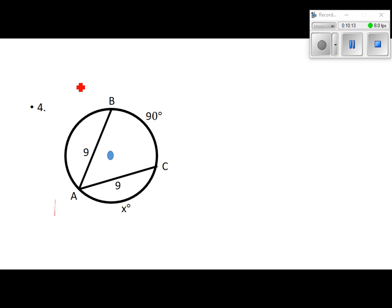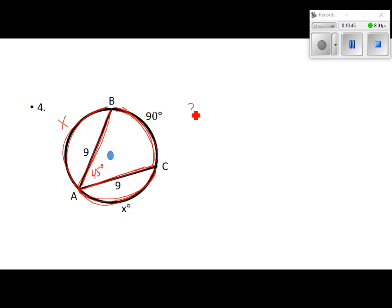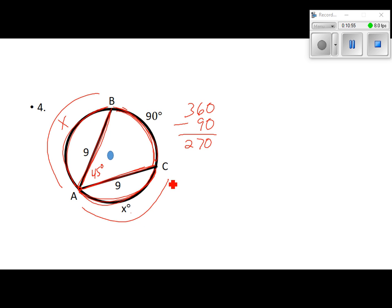Number 4: the two chords are both 9, so arc CA and arc AB have to be equal — call each one X. We're told one arc is 90 degrees. A whole circle is 360, so 360 minus 90 leaves 270 for the two equal arcs together. Divide by 2 and each arc is 135 degrees.